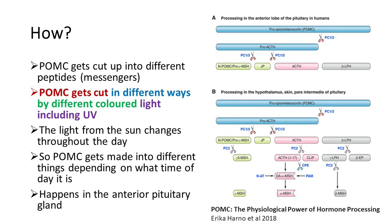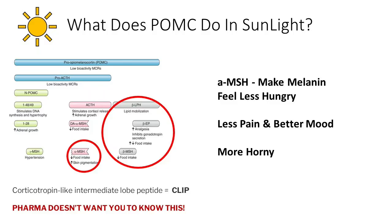When POMC is cleaved in sunlight, it makes us feel less hungry because we're making more alpha MSH, we have less pain, we're in a better mood and a bit more aroused. People know from their own experience that when they go out in the sun they feel better.